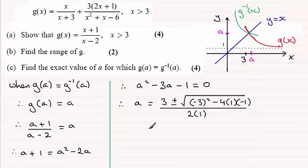And tidying this up we end up with 3 plus or minus—and we've got here 9 plus 4, so that's going to be the root of 13—and that's all divided by 2.